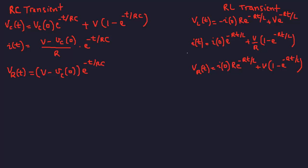We'll be solving problems with RC and RL transients. Transient behavior is essentially observed when a voltage or current source is connected to a circuit with capacitors or inductors. I've selected a couple of problems here, and these are the formulas from the FE book that we're going to need for RC and RL transients.